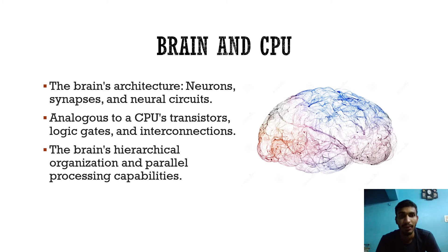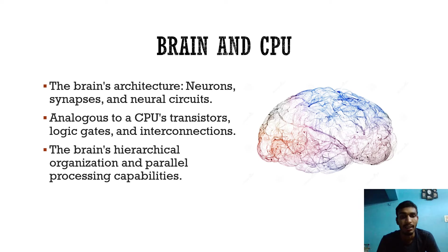Brain and CPU comparison: neurons, synapses, and neural circuits make up the brain structure, analogous to CPU transistors, logic gates, and interconnections. The brain's hierarchical organization and parallel processing capabilities make it similar to the CPU.